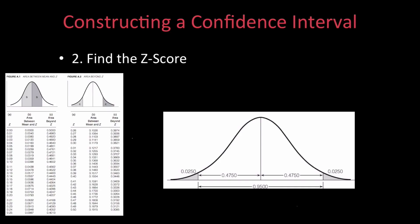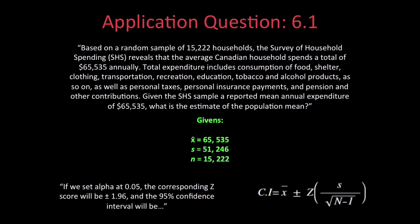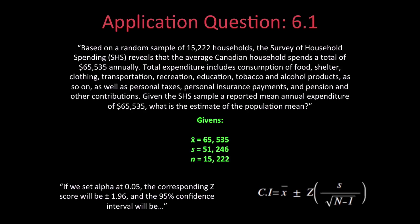To show you how estimation procedures work, we will be looking at application 6.1 from the Healy and Proust textbook. Turn to page 156 and follow along. The question presents the following scenario: based on a random sample of 15,222 households, the Survey of Household Spending (SHS) reveals that the average Canadian household spends $65,535 annually.